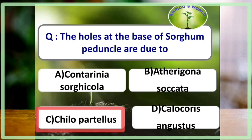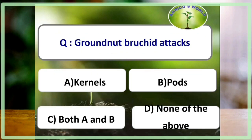The holes at the base of sorghum peduncle are due to Chilo partellus, because of the biting of larva across the leaf spindle. Groundnut bruchid attacks both kernels and pods.